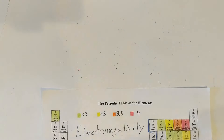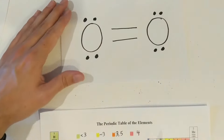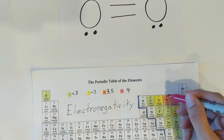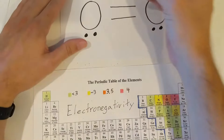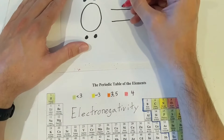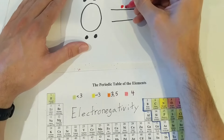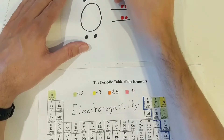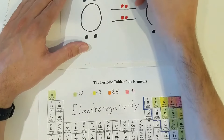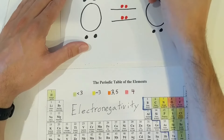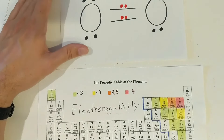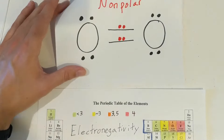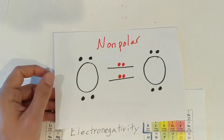Here we have two oxygen atoms. Since both are the same atom, the electrons are always going to be shared equally — here we actually have four electrons being shared equally. So this is a nonpolar bond.